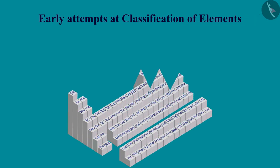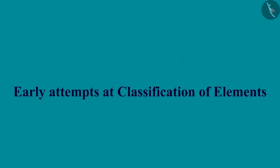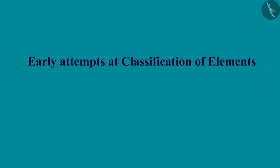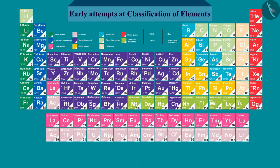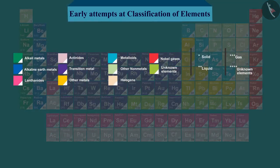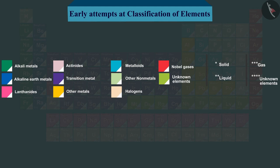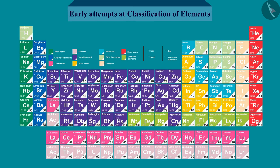Hello friends, welcome to this video session. The topic we are going to cover is early attempts at classification of elements. There are 118 elements known at present, and it is very difficult to study the properties of all these elements separately. So all the elements have been divided into a few groups such that elements in the same group have similar properties.